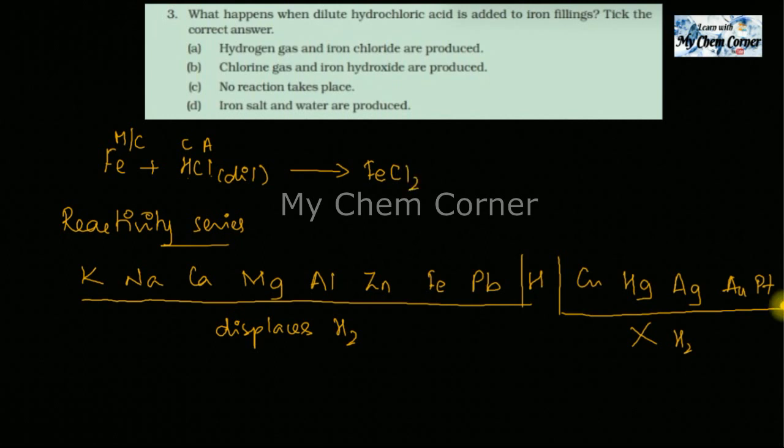This will form FeCl2 plus hydrogen gas. Why I have put arrow upward is because this arrow upward means gas is produced and it is released up. It is getting evaporated. So here you are getting iron chloride plus hydrogen as your answer.